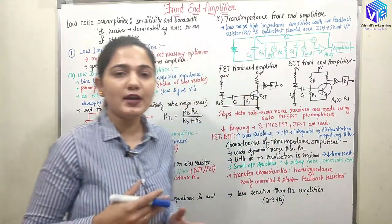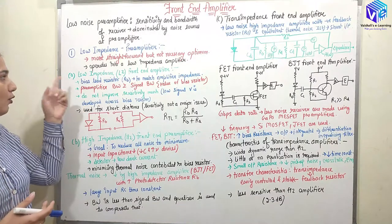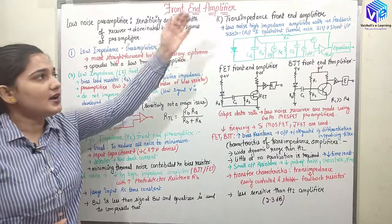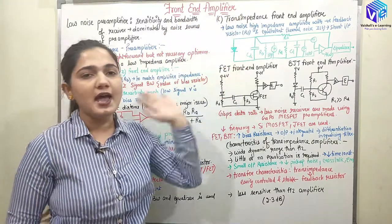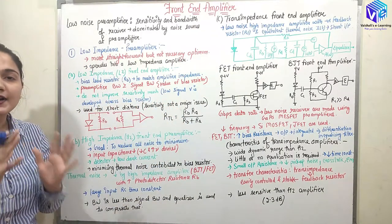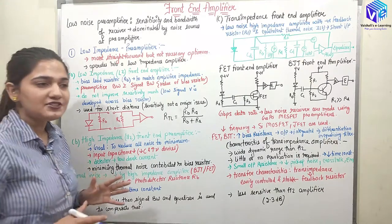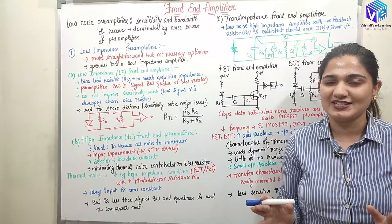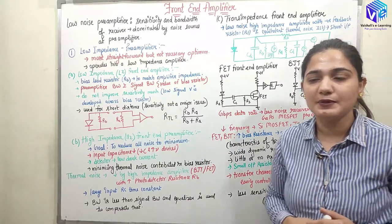First of all, we are going to talk in detail about the low noise pre-amplifiers, then the low impedance front-end amplifier, high impedance front-end amplifier, trans-impedance front-end amplifier, and then FET and BJT front-end amplifiers. We will be having an in-depth understanding about all of them. Now let's start our discussion with the low noise pre-amplifiers.